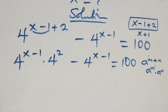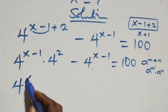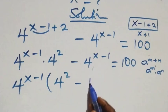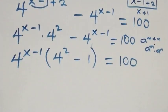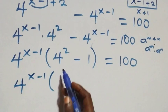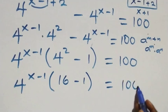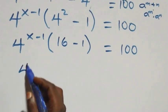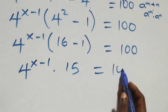The next step: we have 4 raised to power x minus 1 as a common factor. We factor that out and have 4 raised to power x minus 1 into brackets, 4 squared minus 1, close bracket, equals 100. This gives us 4 raised to power x minus 1 times 16 minus 1, and that is 15, equals 100.